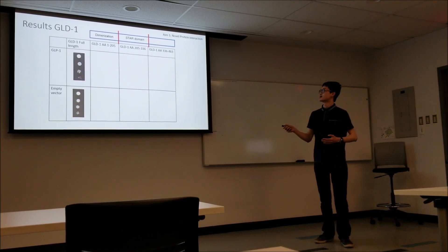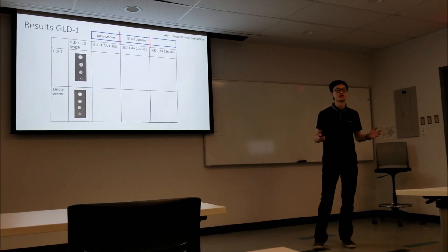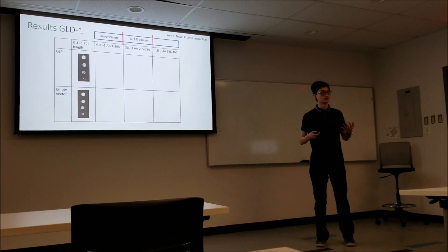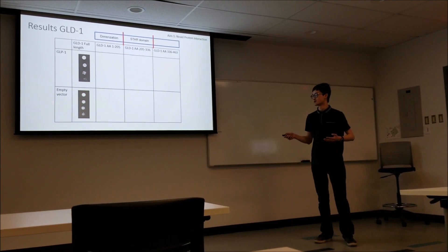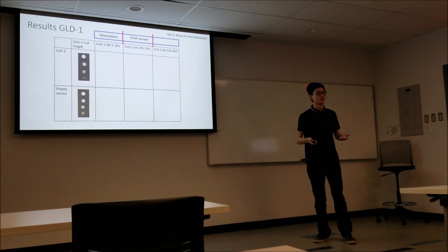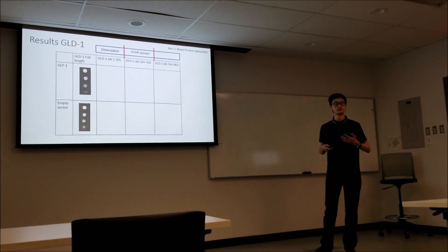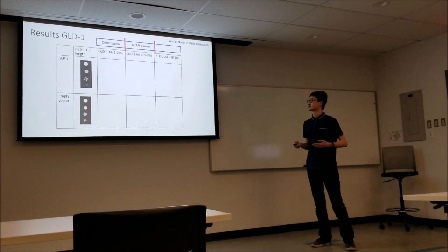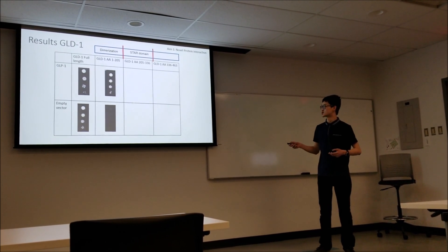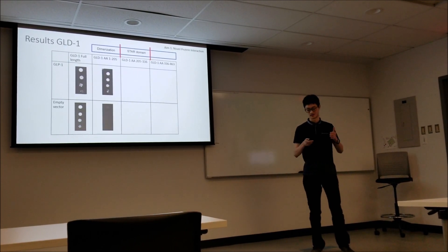We're going to start with GLD1. Before we get to truncations, let's make sure the full-length GLD1 is interacting. Here's full-length GLD1 and here's GLP1, and it looks like the yeast are growing. That's good. But it looks like we got trouble in my negative control, which is an empty vector, so GLD1 alone. The yeast for some reason is also growing. There's probably some background interaction. So this result we can't trust for sure. Let's get to the first truncation, this dimerization region, the first 1-205 amino acids. This is much better, this makes me happy. It looks like it's interacting. Nice clean negative control background.